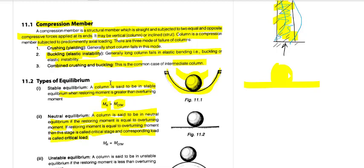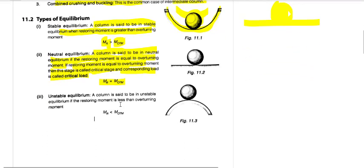When the restoring moment is equal to the overturning moment, this stage is called the critical stage and the corresponding load is called the critical load. In unstable equilibrium — on a curved surface — the overturning moment is greater than the restoring moment. These are the types of equilibrium conditions in columns.